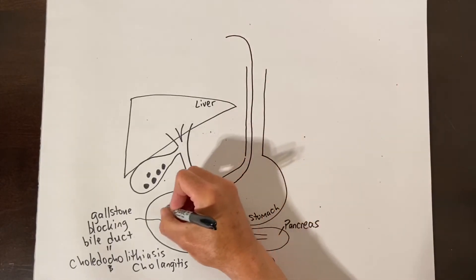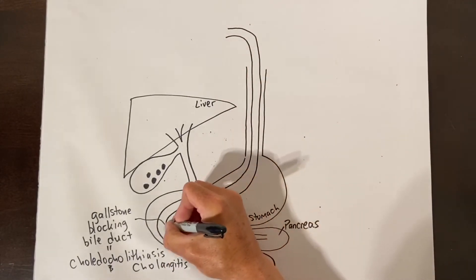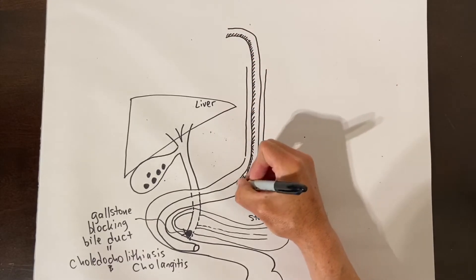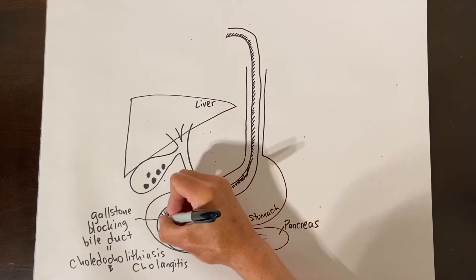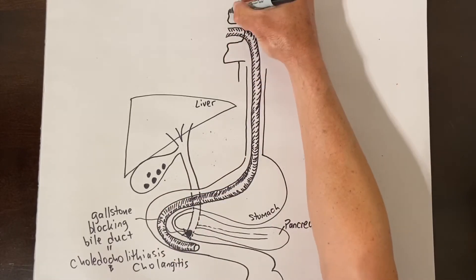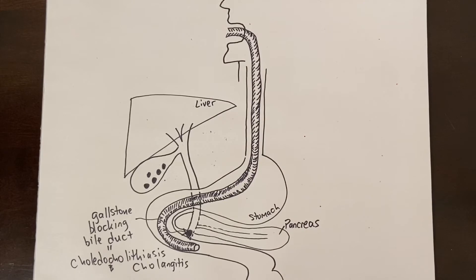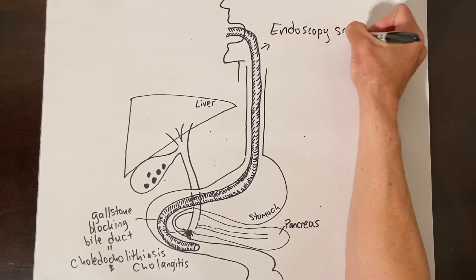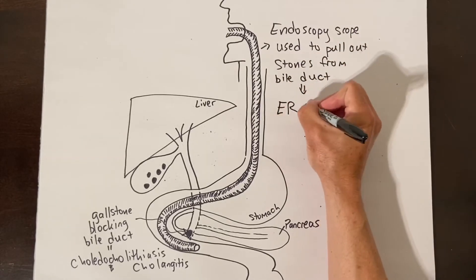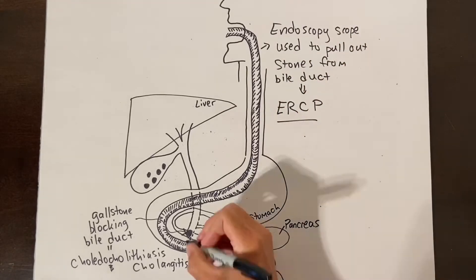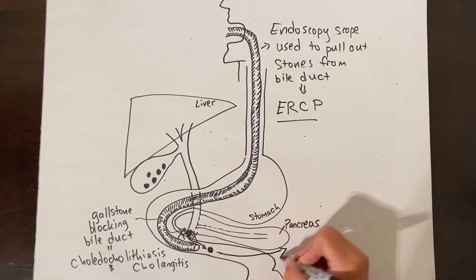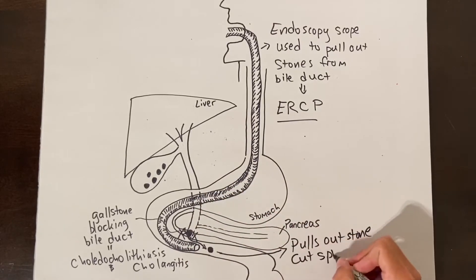Choledocolithiasis and cholangitis are treated by unblocking the bile duct usually by using an endoscopy scope that comes through the mouth and comes into the bile duct through its opening into the intestine. The stones in the bile duct are pulled out into the intestine and sometimes the muscle that controls the connection between the bile duct and the intestine, the sphincter of Oddi, is actually cut to allow the stones to come out. This endoscopy procedure is called an ERCP.